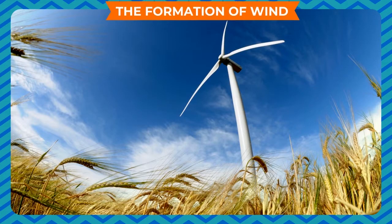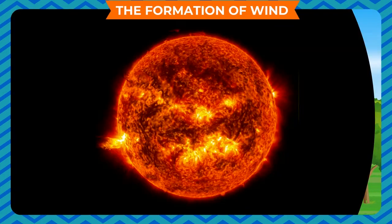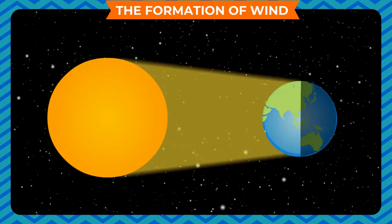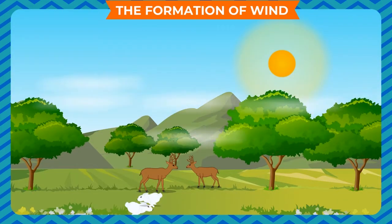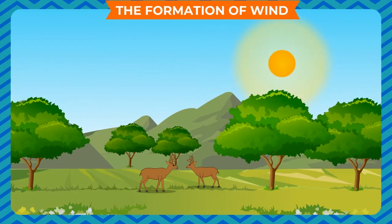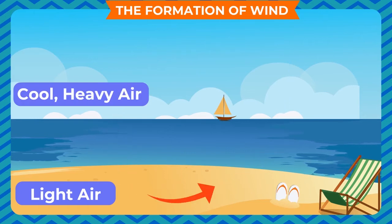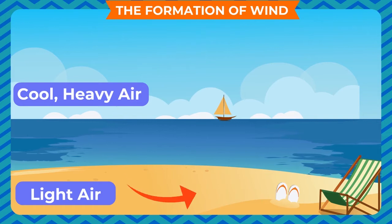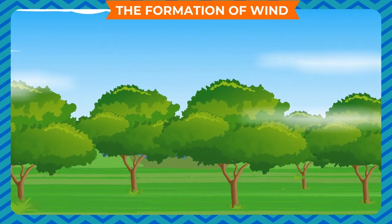The formation of wind: The main cause behind the formation of wind is the heat of the sun. When the sun heats different parts of the earth and the heat is unevenly distributed, wind is caused. Air expands on heating and becomes lighter. This light air rises up, and the cool, heavy air rushes to take its position. This moving air is what we call wind. When the speed of moving air is slow, it is called breeze.